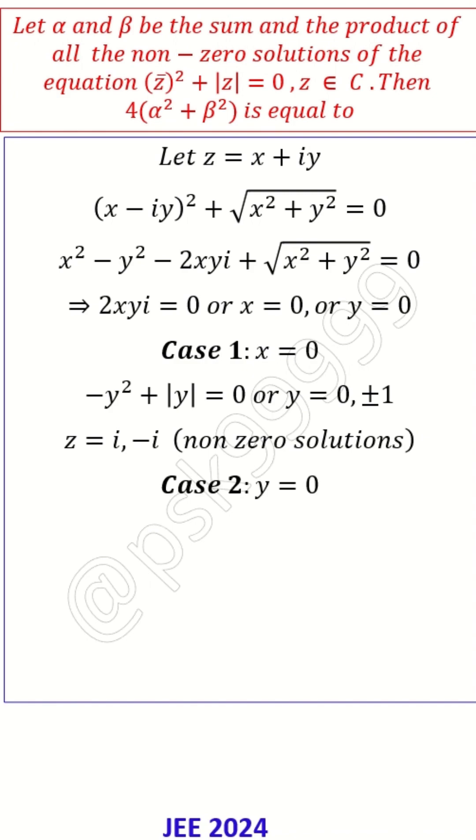Then case 2 is y = 0. If y equals zero, it will become x² - |x| = 0. Now we know that x² is always positive, absolute x is always positive, so this is possible only if x = 0.